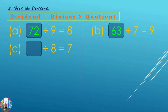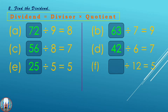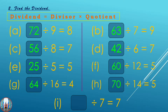Third sub-question: 8 and 7 — 8 sevens are 56. Then 6 sevens are 42, 5 fives are 25, and 12 fives are 60. And 7 sevens are 49.